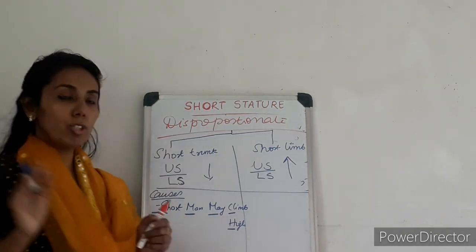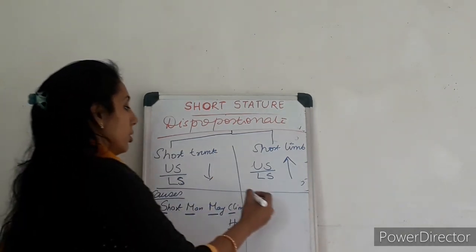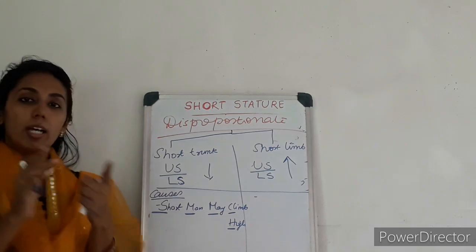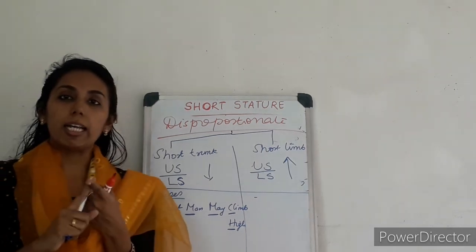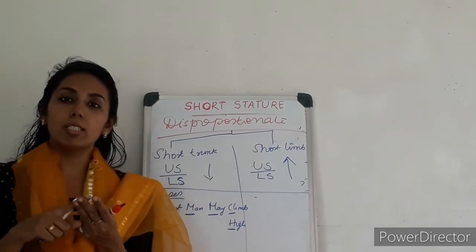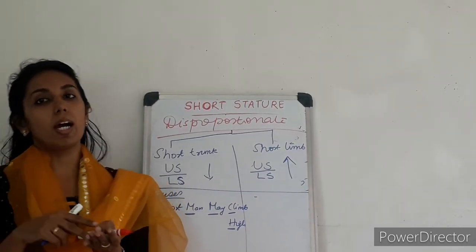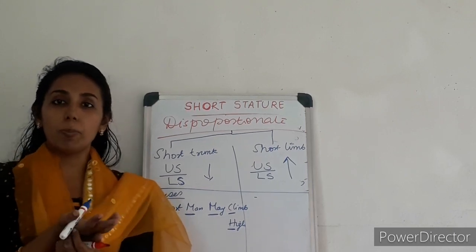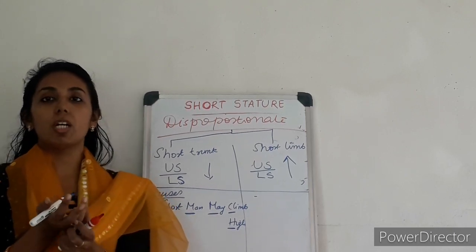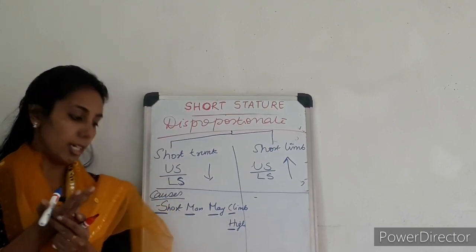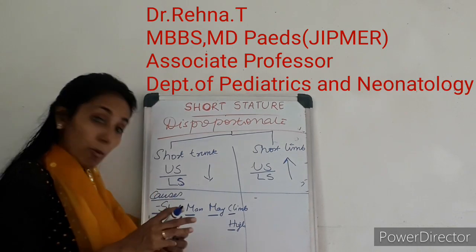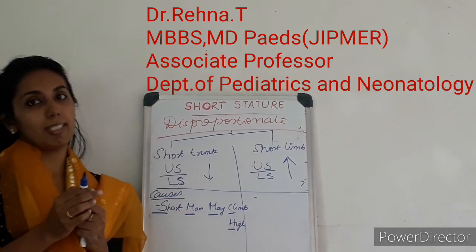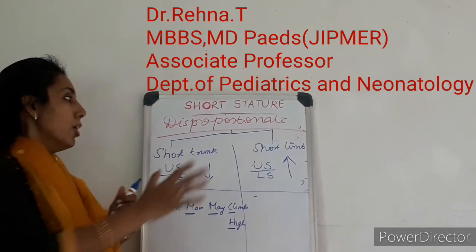Coming to causes of short limb dwarfism — we have so many causes: rickets, achondroplasia, osteogenesis imperfecta, hypothyroidism, chondrodysplasia punctata, hemichondroplasia, hypochondroplasia, and metaphyseal chondrodysplasia, etc.